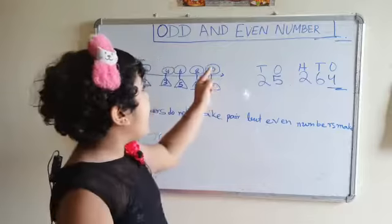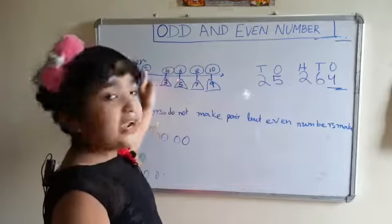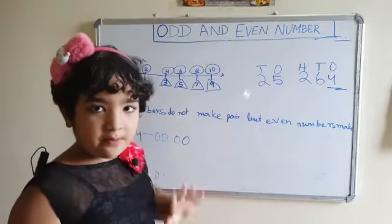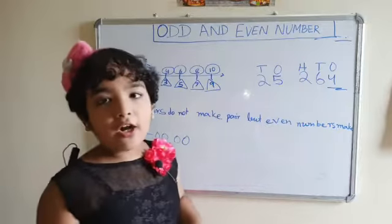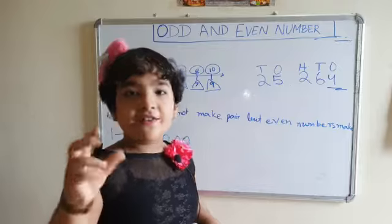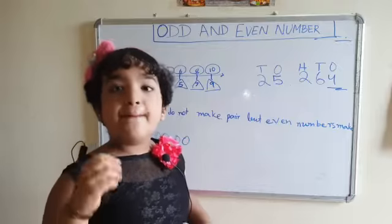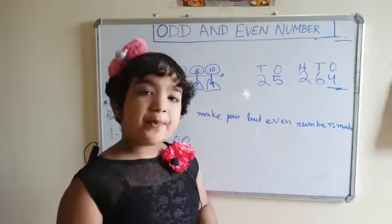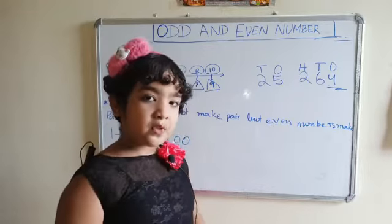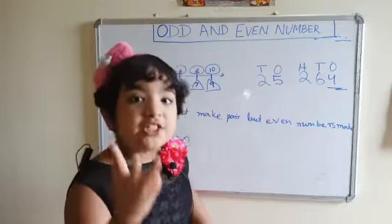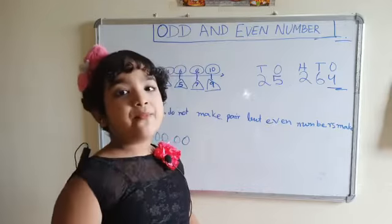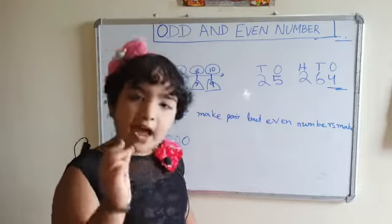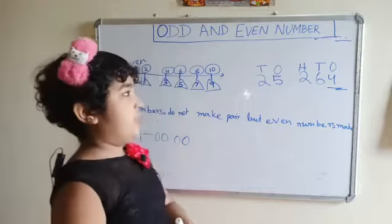So this is why I have told you the one-digit odd and even numbers. But if you have a 2-digit or 3-digit number, then how do we understand? How do we know?